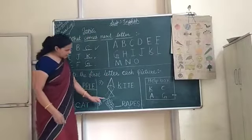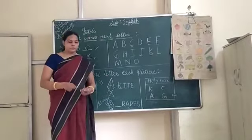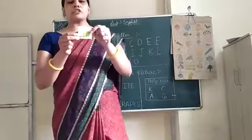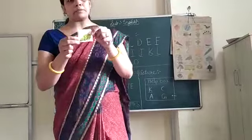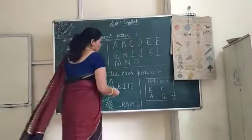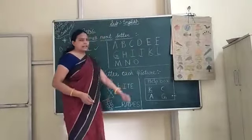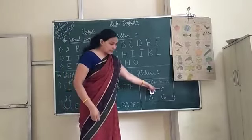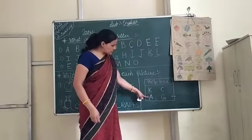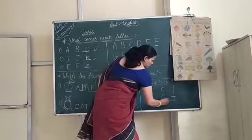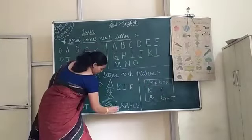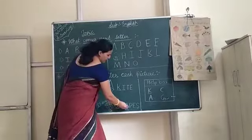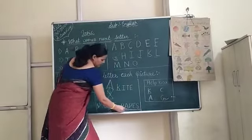The next picture is G for grapes. This picture shows G for grapes. So where is the G letter? Is this C? No. Is this? No. Is this? No. This is G for grapes. G, R, A, P, E, S — grapes. These spellings are now complete.